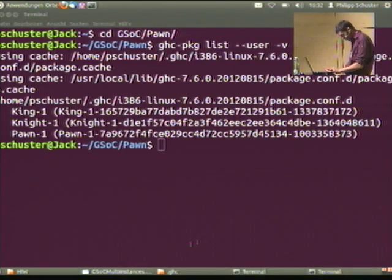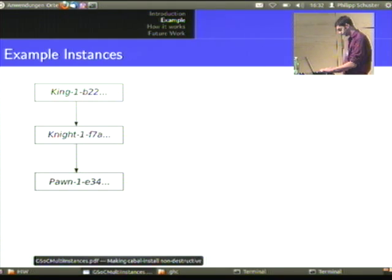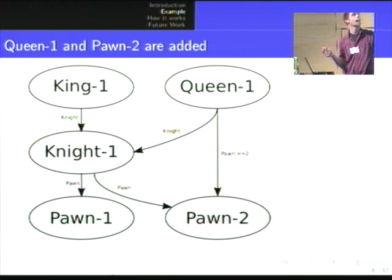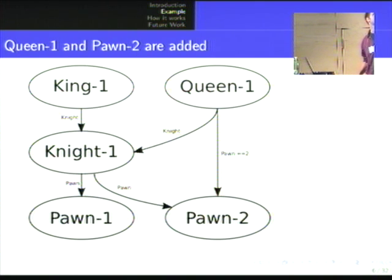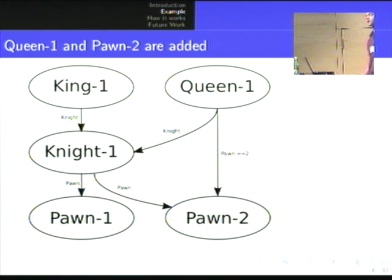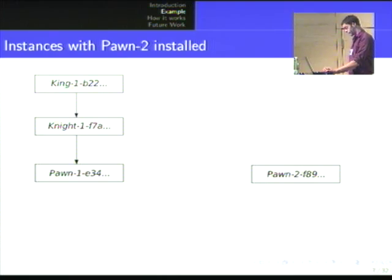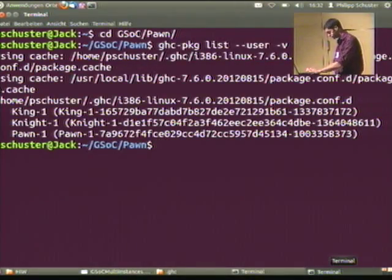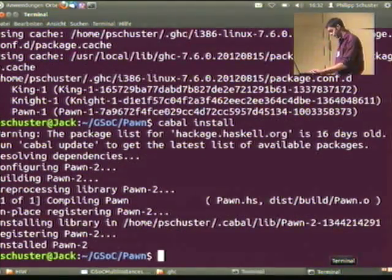Let's suppose there are two more packages at edit or release. There's a queen package that depends on any version of a knight package, and it depends on specifically version 2 of this newly updated pawn package. Let's try and install this pawn package first. Okay, works fine.